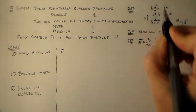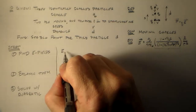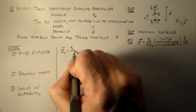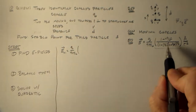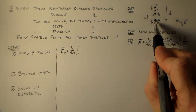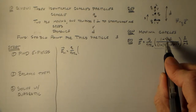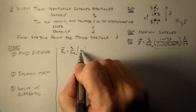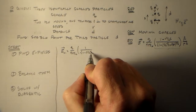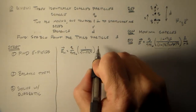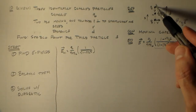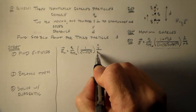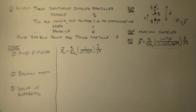Calling the stationary charge zero, and the two moving charges one and two: the electric field on zero from one equals Q/(4πε₀) times this expression. Since charge one is moving perpendicular, the angle is 90°, sine of 90° is one, so we get 1/√(1 − V²/C²) in the Y-hat direction, divided by S².